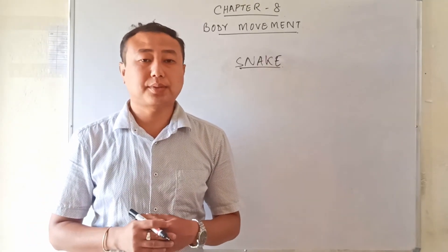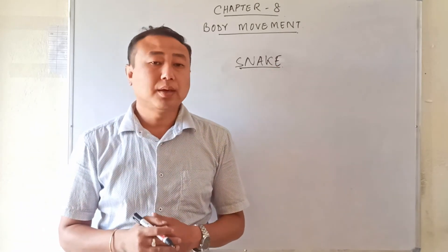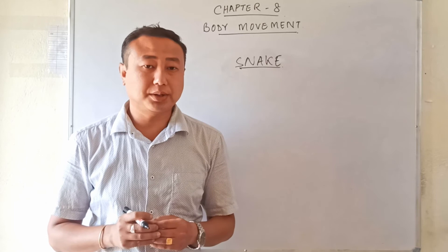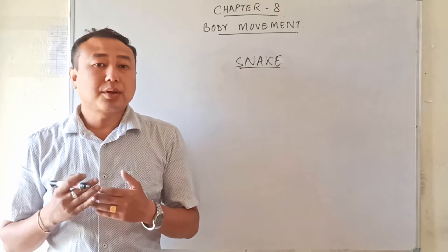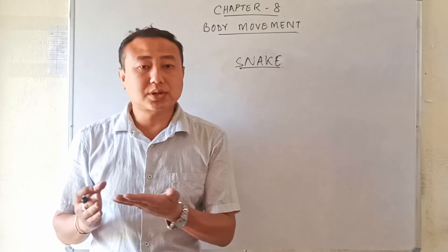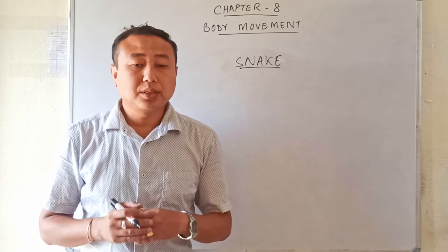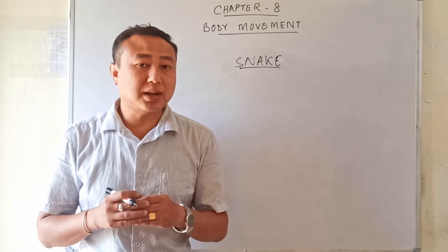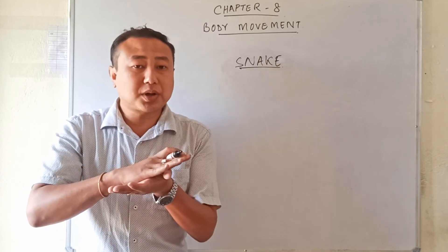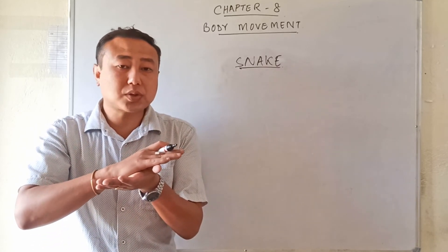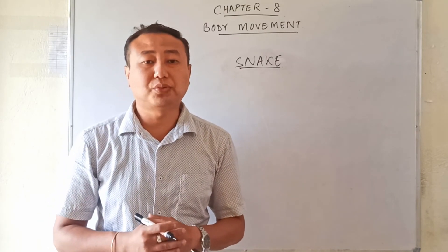The last animal included in this chapter is the snake. The snake has a long backbone inside its body and rows of muscles. The row muscles in contact with the ground surface undergo contraction and expansion, developing pressure on the ground. This contraction, expansion, and pressure on the ground helps push the snake's body forward, and in this way the snake moves.